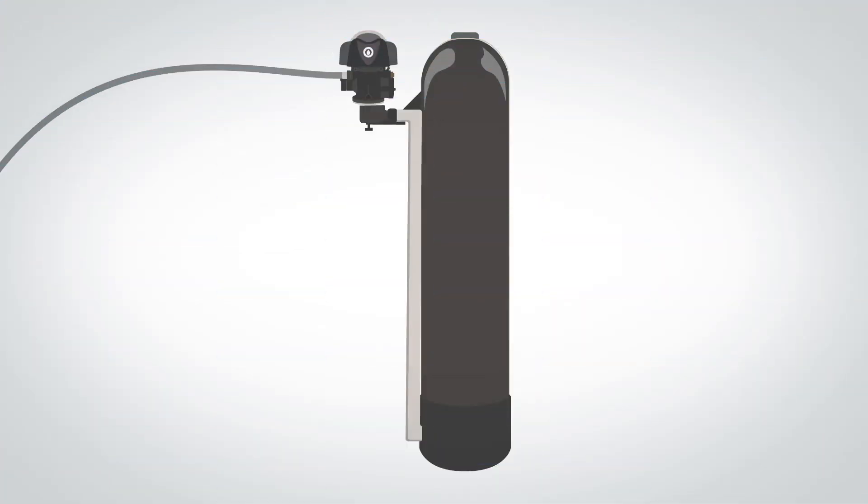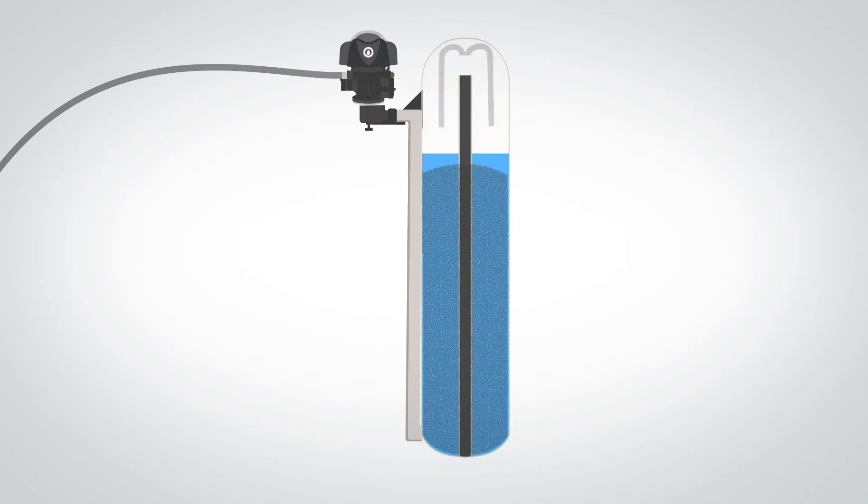Over time, the filter will need to go through a regeneration cycle in order to clean the media. During this regeneration cycle, the control valve begins by decompressing the tank and allowing any excess air to be released out the drain line.